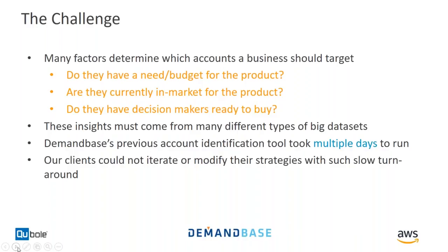The way we answer these questions is by using many types of very large data sets, and then running machine learning on them to find the right accounts. Demandbase had a previous solution that could take all these different factors and use machine learning to find the right accounts, but it took multiple days to run. That was a huge challenge for clients because getting this to work right takes iteration — they need to tweak parameters and see how results improve. That kind of iteration becomes very difficult if each run takes multiple days. So we decided we needed a much faster solution.